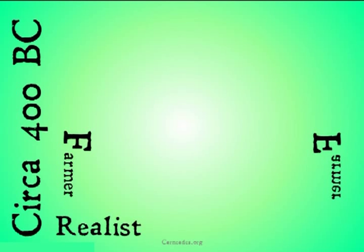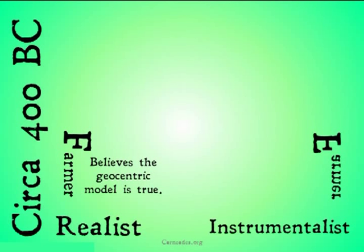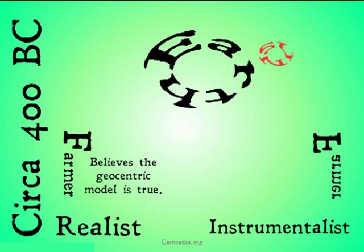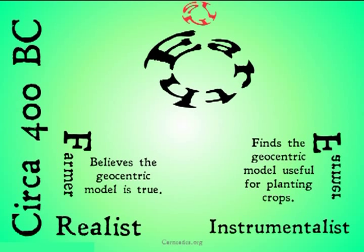Let's use an example. Imagine we're back in ancient Greece, and we have two farmers. One of them is a scientific realist, and one of them is a scientific instrumentalist. The realist believes that the geocentric model is true and plants his crops based on it — geocentric, remember, is where the sun goes around the earth. The instrumentalist, on the other hand, finds the geocentric model useful for planting crops and plants his crops based on that model, but does not believe that the model is the case. As you can see, he can still plant his crops just fine without having that belief, merely using the concept, and still remain rational.